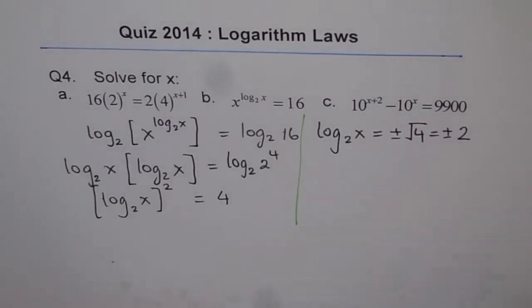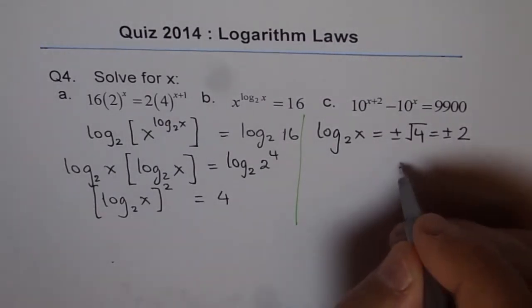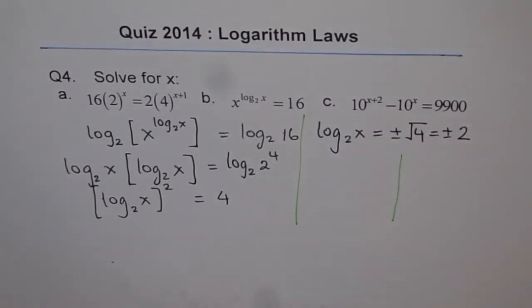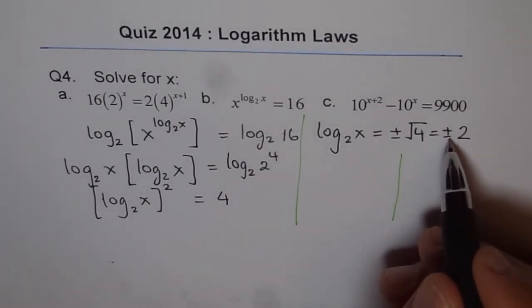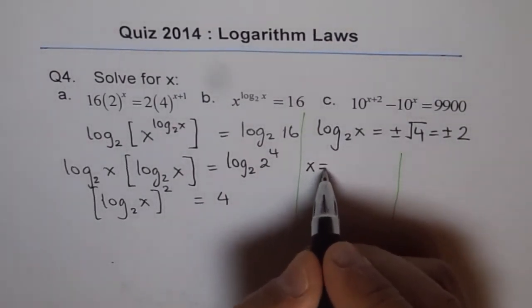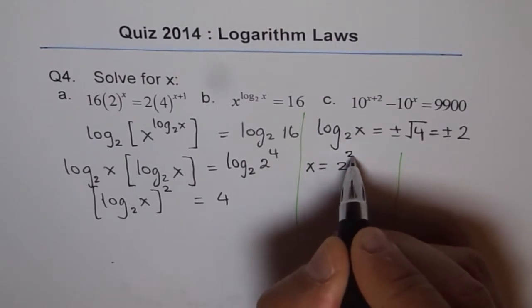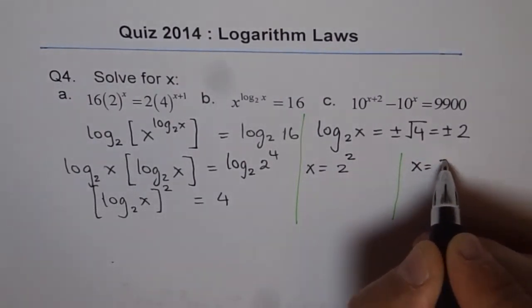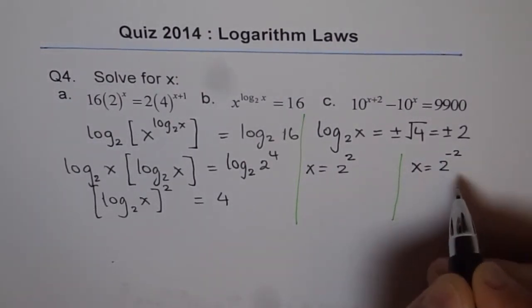And so we get two solutions from here. One solution for plus 2, the other one for minus 2. So we get x is equals to 2 to the power of 2 or x equals to 2 to the power of minus 2.